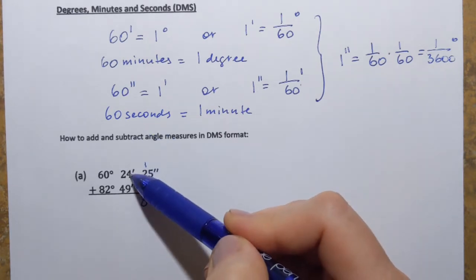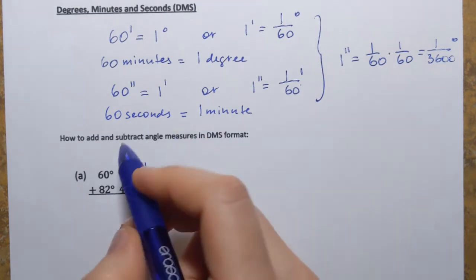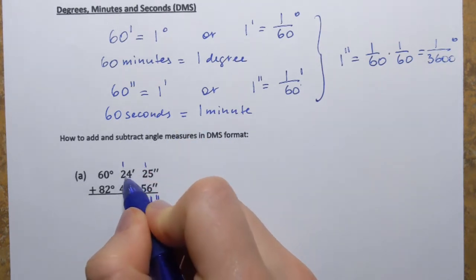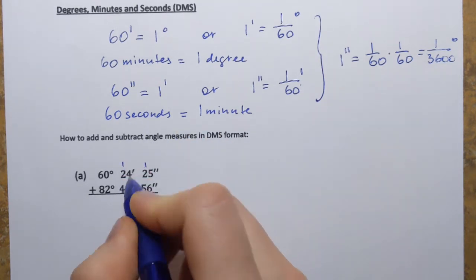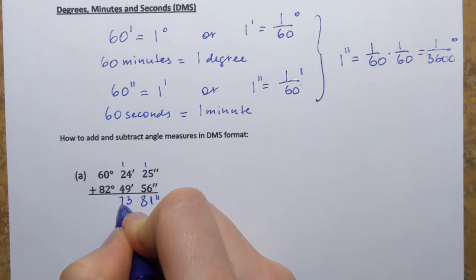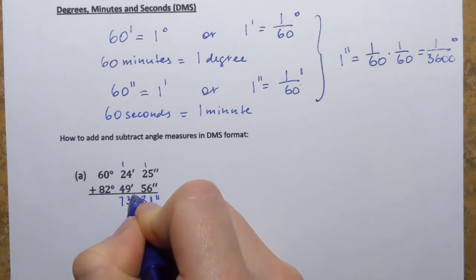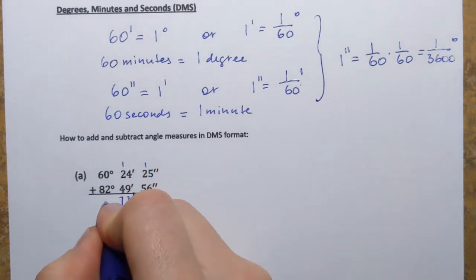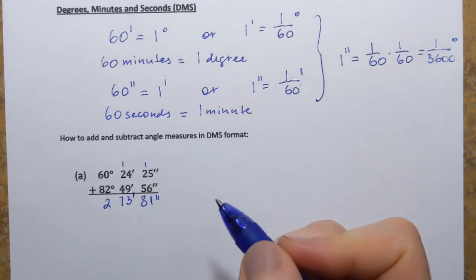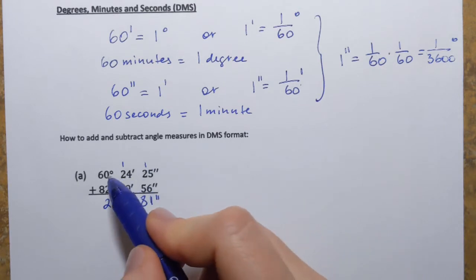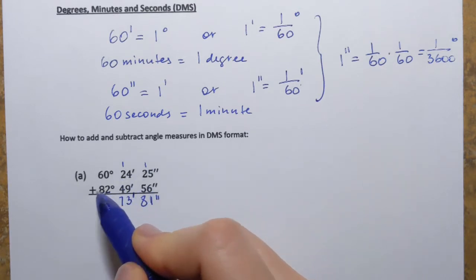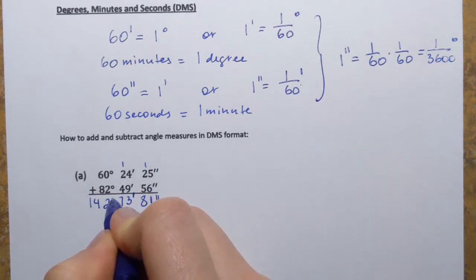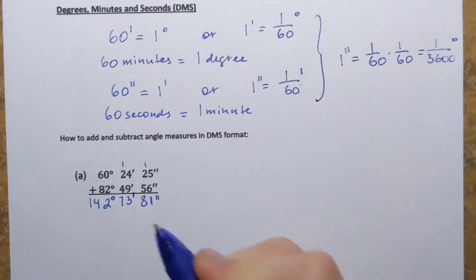Next, adding the minutes: 4 plus 9 is 13; 2 plus 4 is 6, plus 1 is 7. That gives 73 minutes. Then the degrees: 0 plus 2 is 2; 6 plus 8 is 14. That gives 142 degrees.